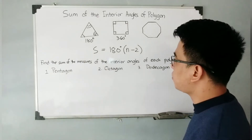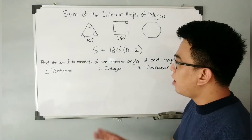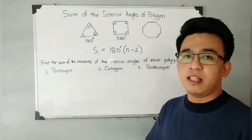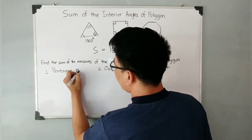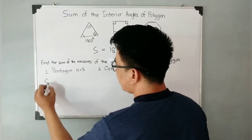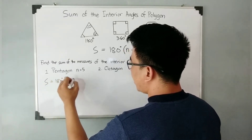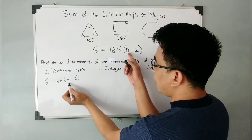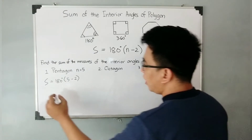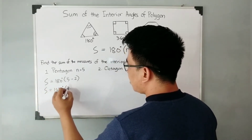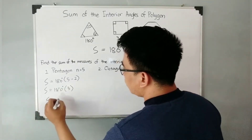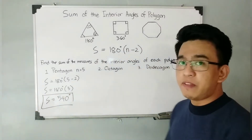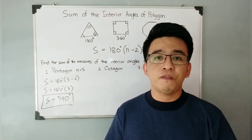For you to understand how to use this formula S = 180(N - 2), we will solve this problem: find the sum of the measures of the interior angles of each polygon. These polygons have more than 3 sides. For example, we have a pentagon, which is a five-sided polygon, meaning N = 5. So S = 180 degrees times (5 - 2), which gives S = 180 times 3, which equals 540 degrees. Therefore, the sum of the interior angles of a pentagon is 540 degrees.